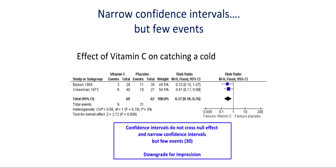What if there are narrow confidence intervals but very few events? This example from the literature on vitamin C and the common cold shows two studies with an overall estimate of effect of 0.37 and a confidence interval from 0.18 to 0.76. Despite the confidence intervals not crossing a relative risk of 1, there are only 30 events in about 131 patients, and the confidence intervals remain too wide to avoid downgrading the quality of evidence. The optimal information size would not be met; in other words, there are too few events despite narrow confidence intervals and the impression of benefit.